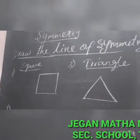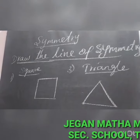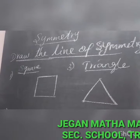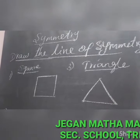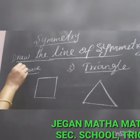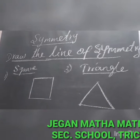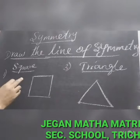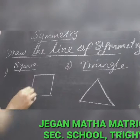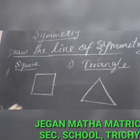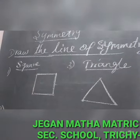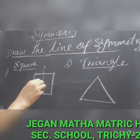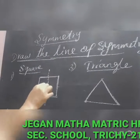Now let us see the symmetrical shapes and the line of symmetry. The heading is: draw the line of symmetry for the given picture. The first shape is a square. You have to draw the dotted lines to divide the shape into two equal halves.